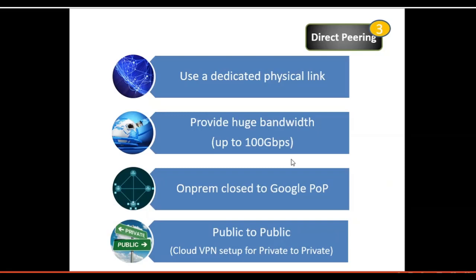Summary of direct peering: it uses a dedicated physical link, provides huge bandwidth up to 100 Gbps, requires your on-prem system to be close to one of the Google POPs, and provides public-to-public IP address access. Interestingly, if you set up Cloud VPN on top of that, you can also achieve private-to-private access.